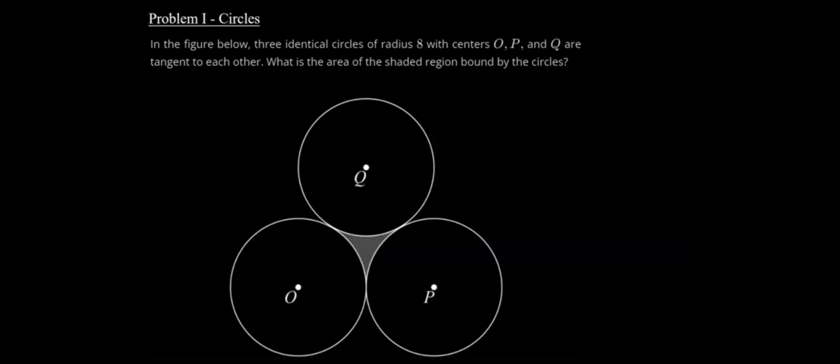Alright, so here's how I'm going to solve it. We know that we have a point of tangency here, a point of tangency here, and a point of tangency here. Knowing this, we can draw a line from each radius to the point of tangency. And we know that the radius is equal to 8. So this is 8, from here to here is 8, from here to here is 8, this is 8, this is 8, and this is 8.